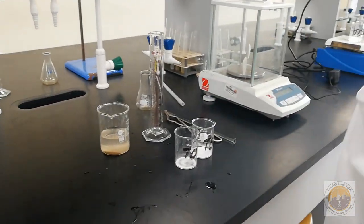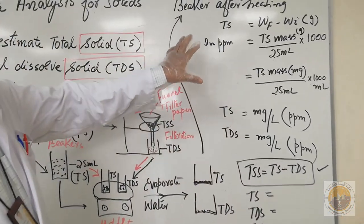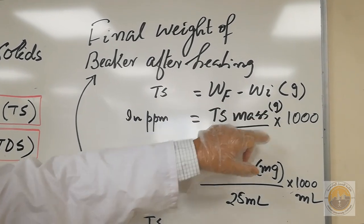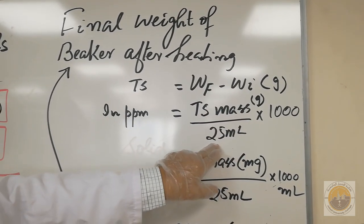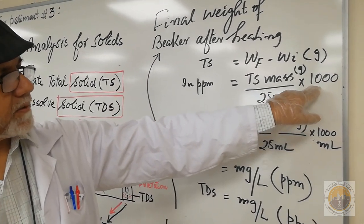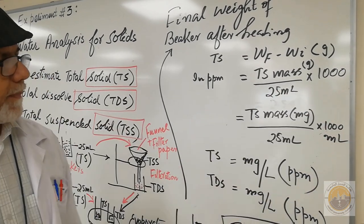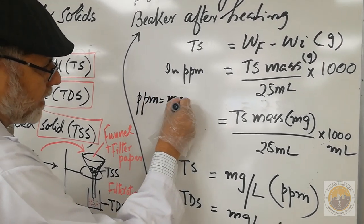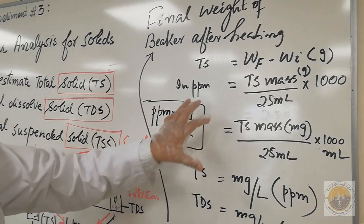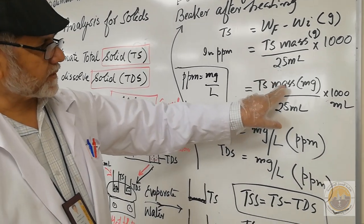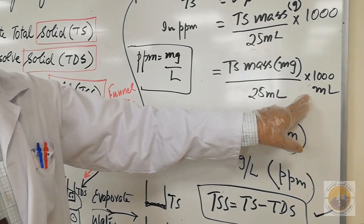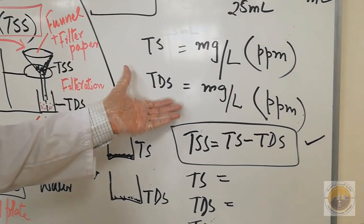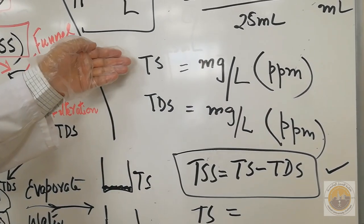For the calculation: TS mass in grams equals the final weight of the beaker after heating minus the initial weight. Then divide by 25 ml and multiply by 1000 to convert to milligrams per liter, since PPM means milligram per liter. This gives TS in mg/L (PPM). The same method is used to calculate TDS in mg/L (PPM).